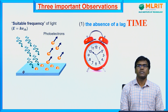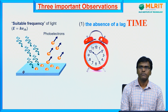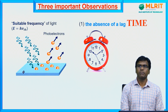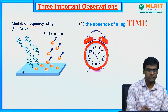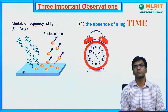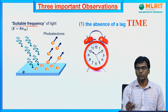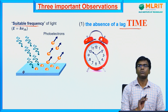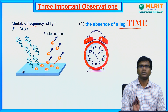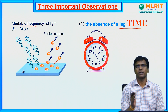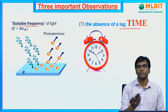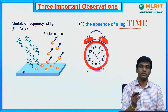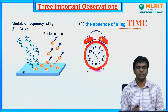As we discussed, whenever you shine a light of suitable frequency, electrons are ejected from the metal surface immediately and spontaneously — there is no time lag between the shining of the light and the ejection of the electrons. When you shine a suitable frequency of light, electrons are immediately ejected from the metal surface. This is the main observation of the photoelectric effect.